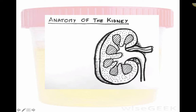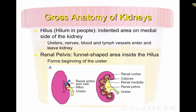Looking at the gross anatomy of the kidney: the hillis — also called the hilum — is the indented area on the medial side of the kidney. This is where the ureters, nerves, blood vessels, and lymphatic vessels enter and exit the kidney. The renal pelvis is a funnel-shaped area inside the hillis and it is the beginning of the ureter.